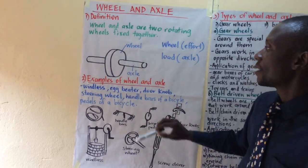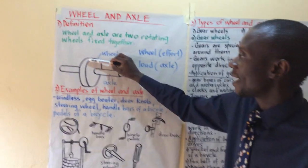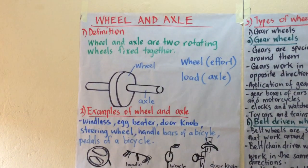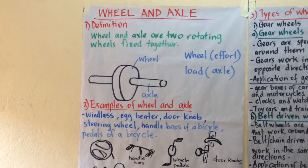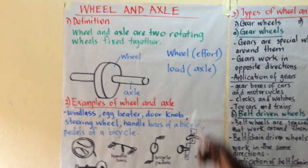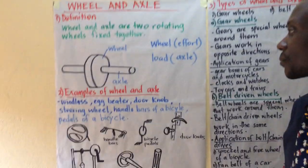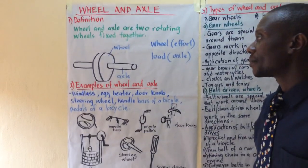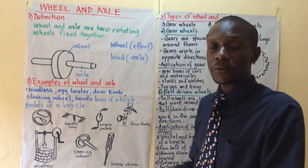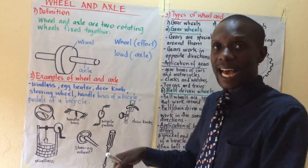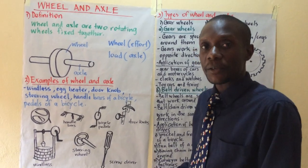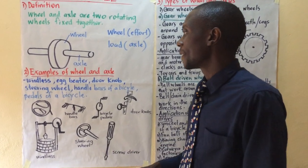That round rod there — the bigger wheel is fixed onto the smaller wheel. The bigger wheel works as the effort arm and the smaller wheel, which is the axle, works as the load arm. So you have to put effort onto the bigger wheel so that you turn the axle, and then the axle will do some work for you — it will work as the load.